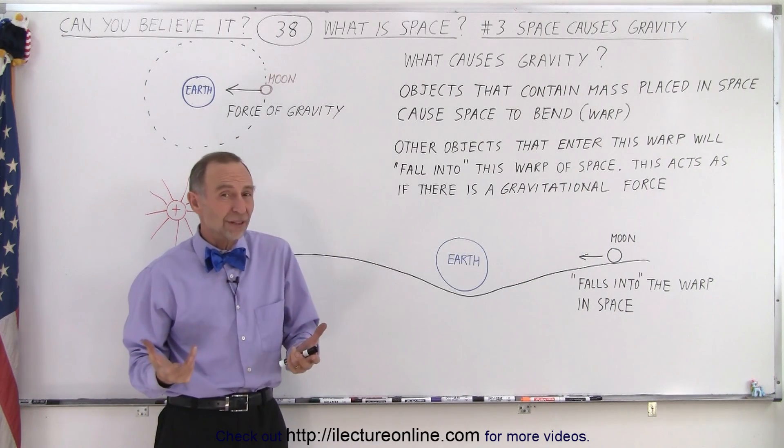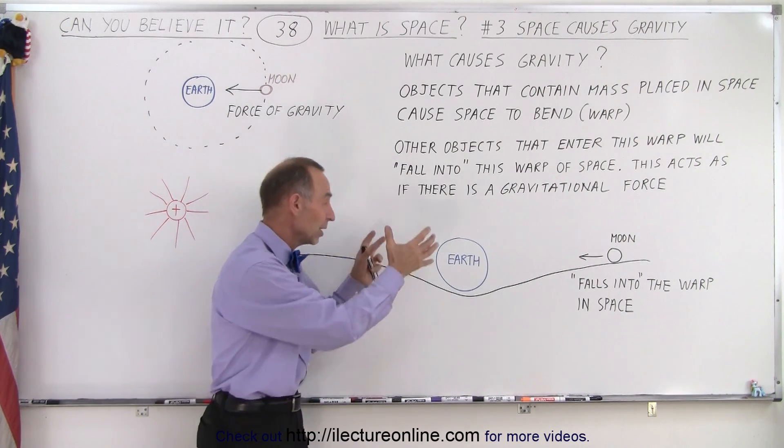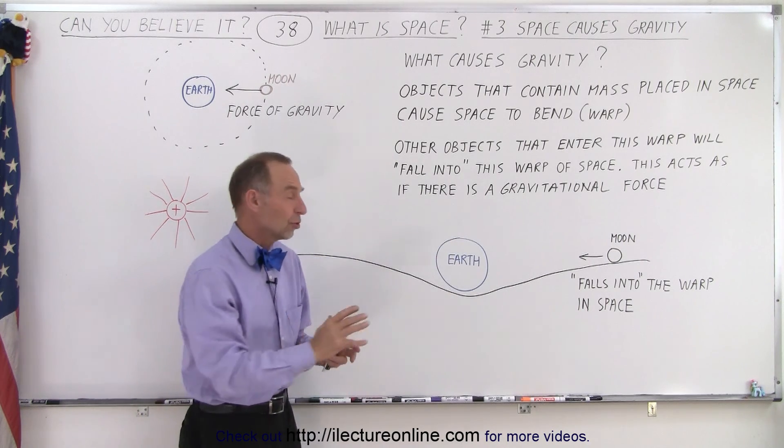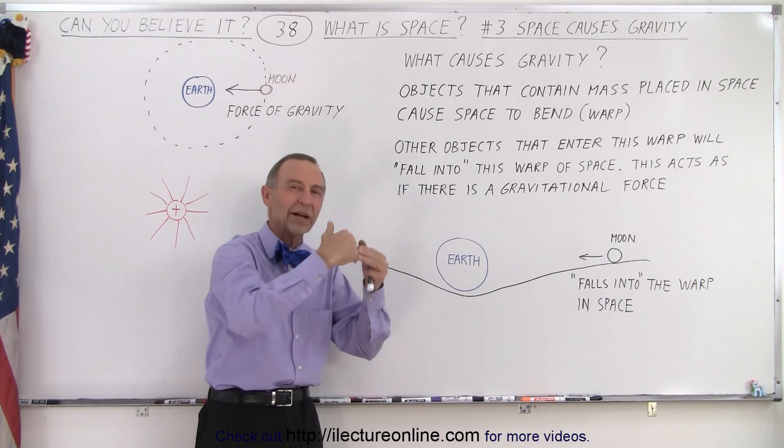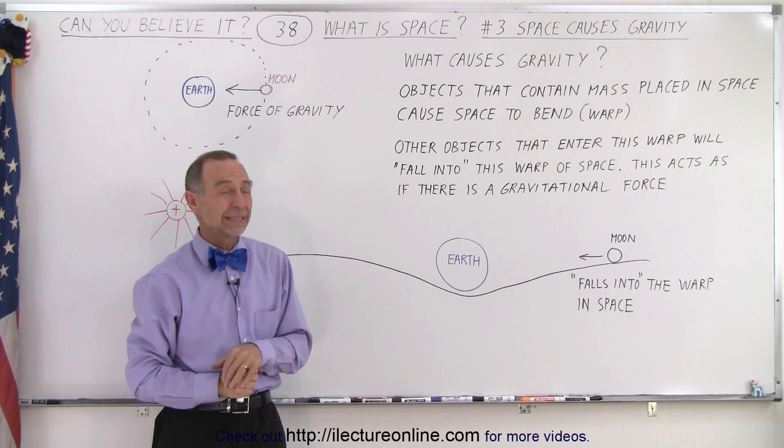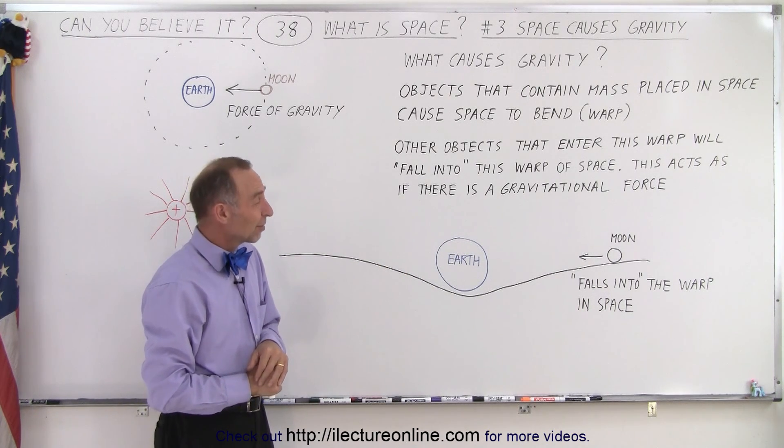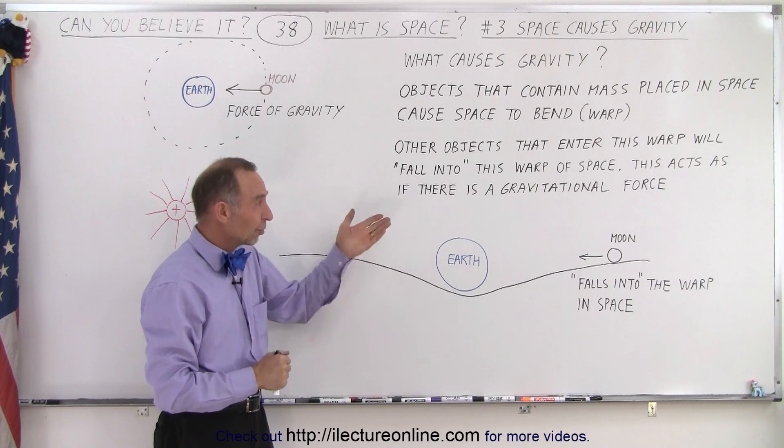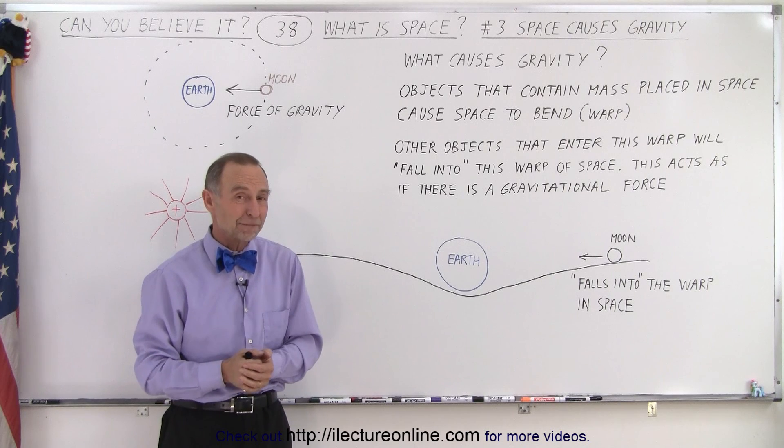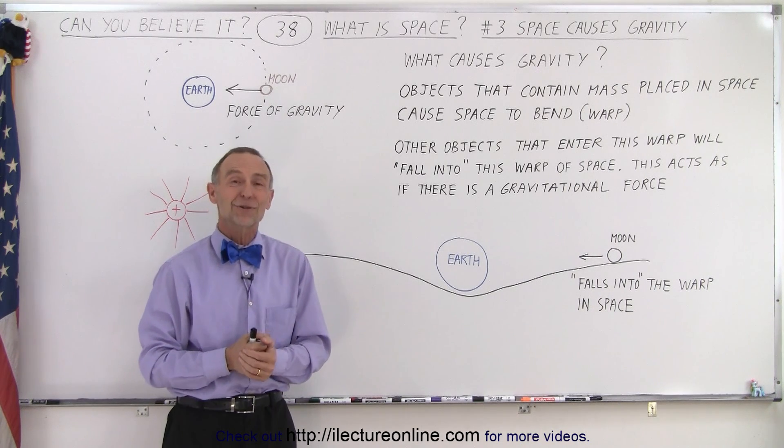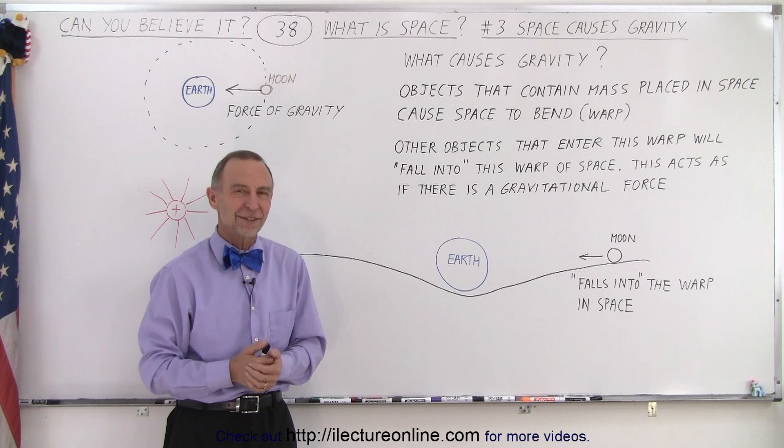So gravitational force is simply caused by putting object into space, which causes space around them to change, which causes then the effect as if there's a force attracting objects to one another. Space is a strange substance, and it does all kinds of interesting things that make the universe go around, so to speak. Well, hopefully we're getting closer to the mystery of what space is.